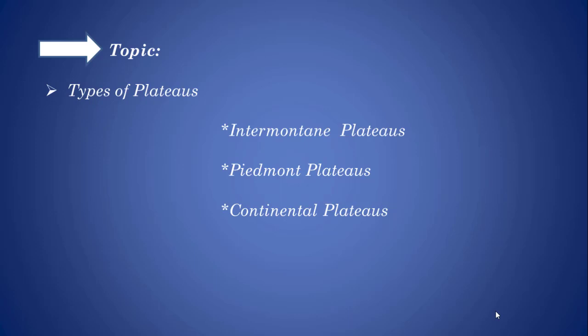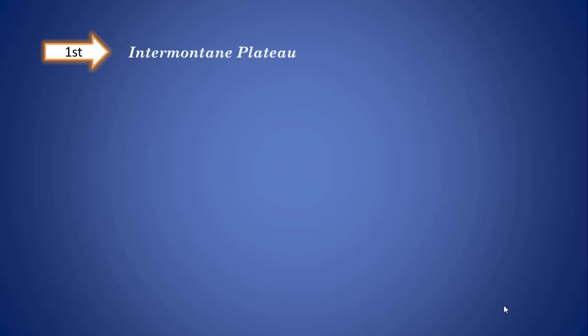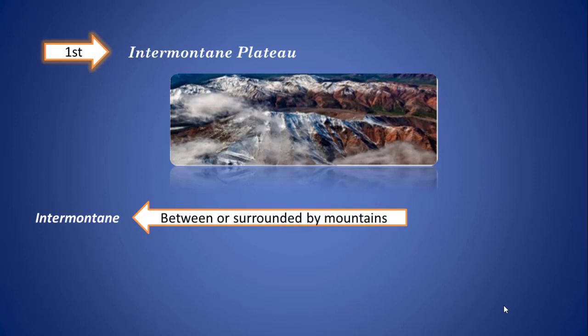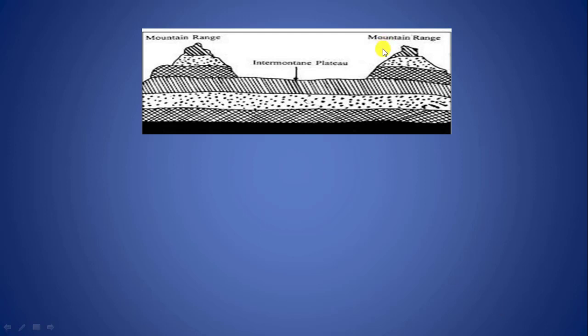The first type of plateau we are going to talk about is intermontane plateau. Intermontane plateaus are the highest plateaus in the world. The word intermontane means between or surrounded by mountains. Dear students, now look at this picture carefully. This raised land area is known as intermontane plateau, and it is surrounded by high mountains, generally the fold mountains.